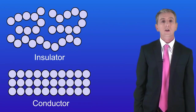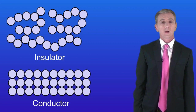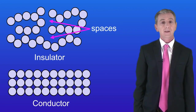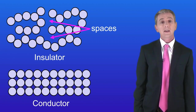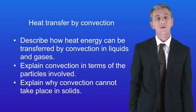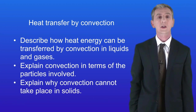Here I've shown you how the particles are arranged in an insulator, and you can compare them with the particles in a conductor. The really obvious difference is that the particles in an insulator are not tightly packed. In fact they have massive spaces in between them, and what that means is that when the particles vibrate in an insulator the vibrations cannot be easily passed onto nearby particles. In other words the heat energy cannot easily move through the insulator.